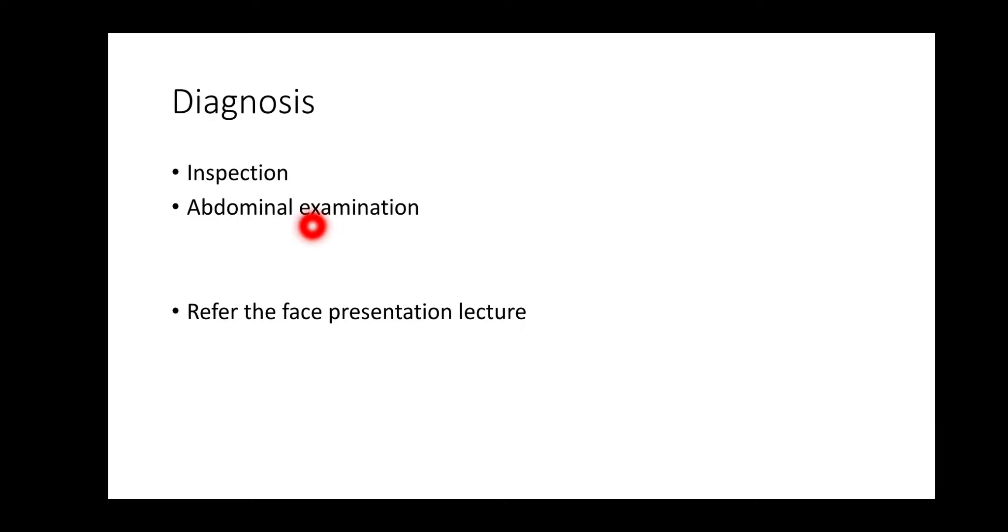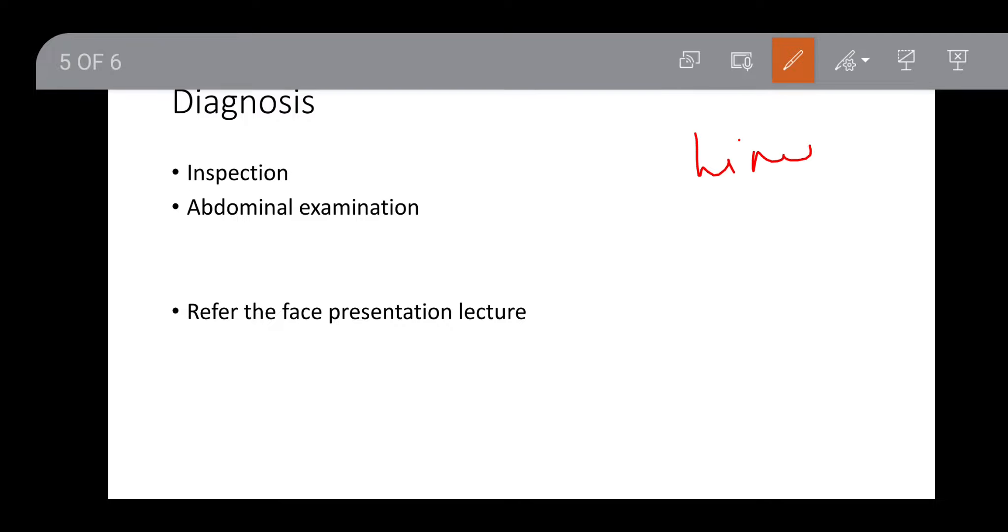Next, let's talk about diagnosis. First, inspection. In inspection, we examine the abdominal area. We will see the linea nigra, which is a sign of pregnancy in the abdominal area. It is a dark line that goes straight from the sternum to the symphysis pubis.